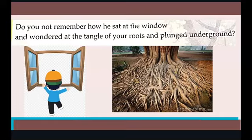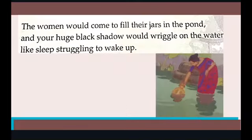The women would come to fill their jars in the pond, and a huge black shadow would wriggle on the water like sleep struggling to wake up. So the women would come to the pond to fill their jars, and the tree's huge black shadow would wriggle on the water, wriggle means it would dance in the water like a stream struggling to wake up.